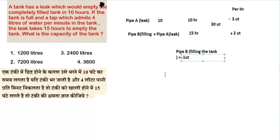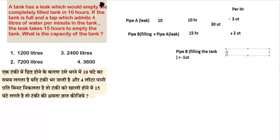Since pipe B fills 1 unit per hour and the total capacity is 30 units, if pipe B is working alone it will take 30 divided by 1 = 30 hours to fill the tank.